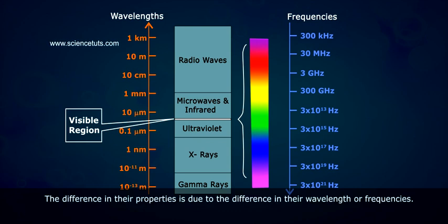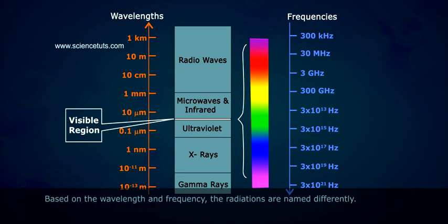The difference in their properties is due to the difference in their wavelength or frequencies. Based on the wavelength and frequency, the radiations are named differently.